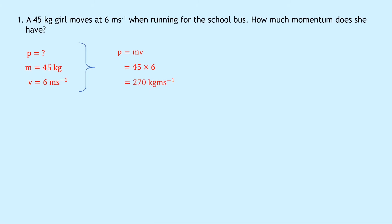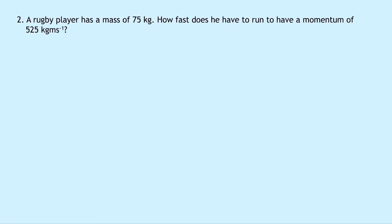Question two says that a rugby player has a mass of 75 kilograms. How fast does he have to run to have a momentum of 525 kilogram meters per second?